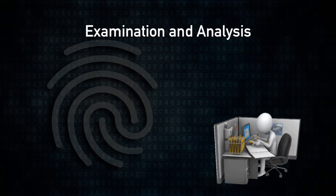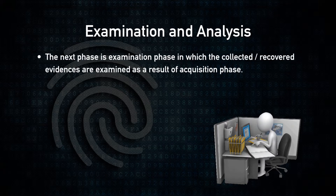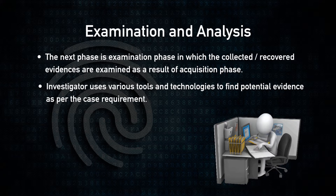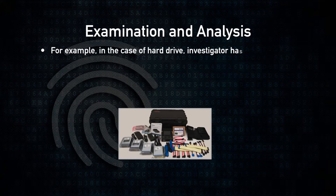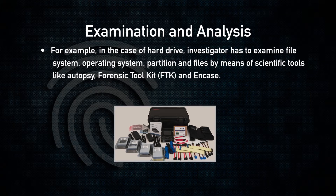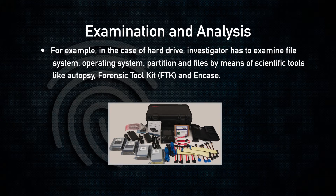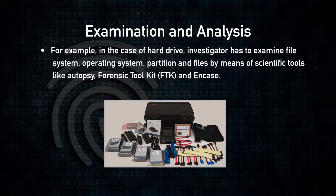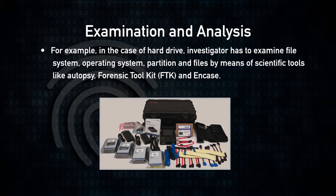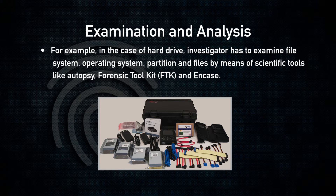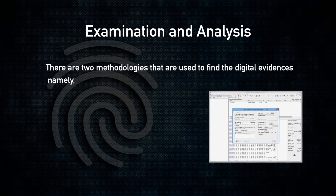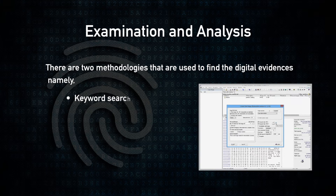The fourth step is examination and analysis. In this phase, the collected evidences from the acquisition phase are examined. The investigator uses various tools and techniques to find potential evidence as per the case requirements. For example, in the case of a hard drive, the investigator examines the file system, the operating system, and the partitions of the hard disk using scientific tools such as Autopsy, Forensic Toolkit (FTK), and EnCase. There are two methodologies used to find digital evidences: keyword search and file carving.